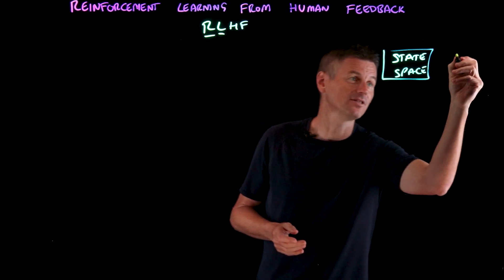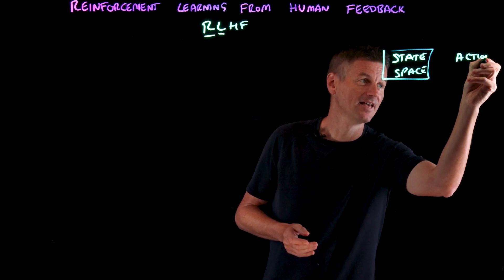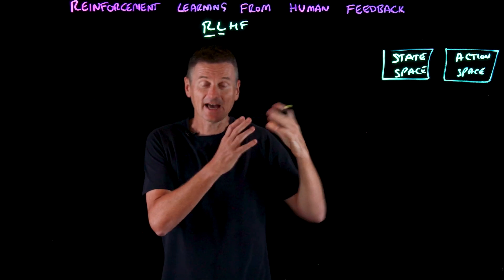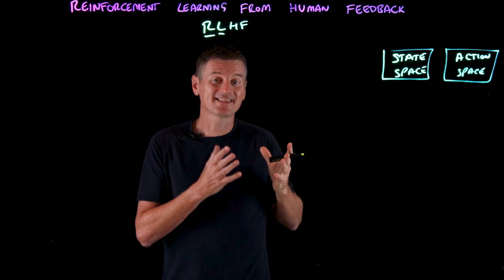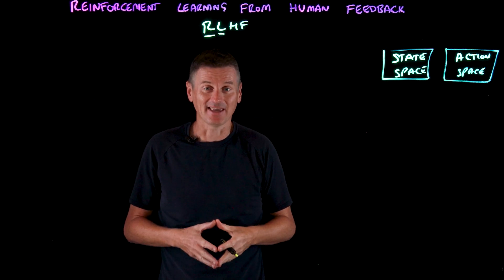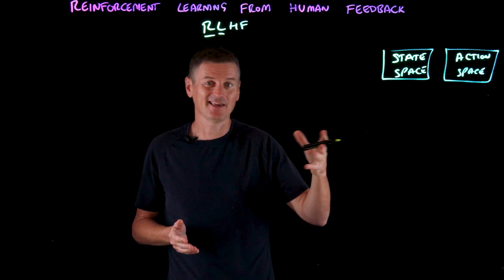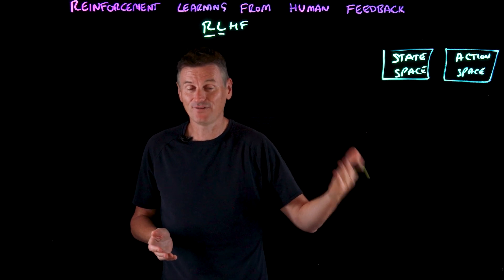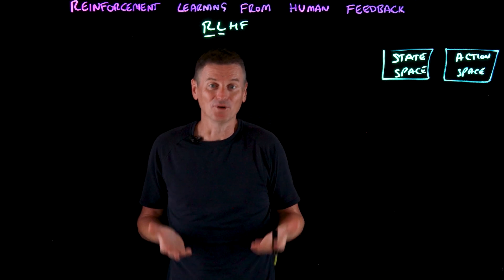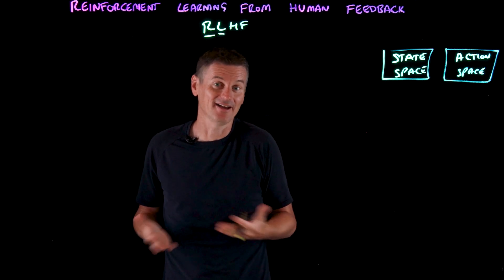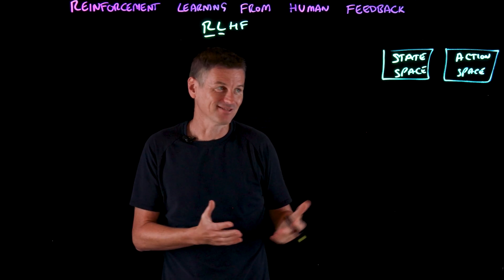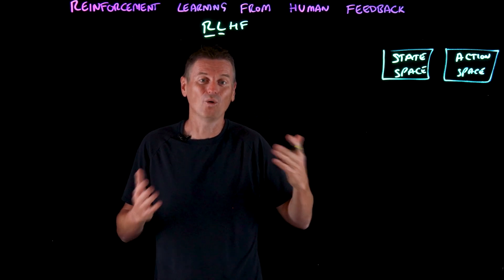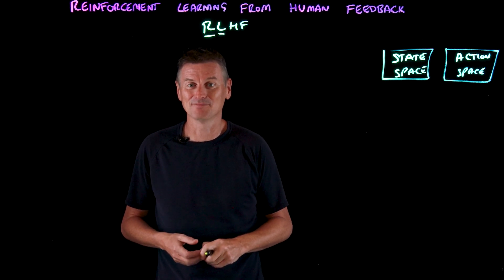Another component is the action space, which contains all of the decisions the AI agent might make. In the context of a board game, the action space is discrete and well defined — it's all the legal moves available to the AI player at a given moment. For text generation, the action space is massive: the entire vocabulary of all of the tokens available to a large language model.